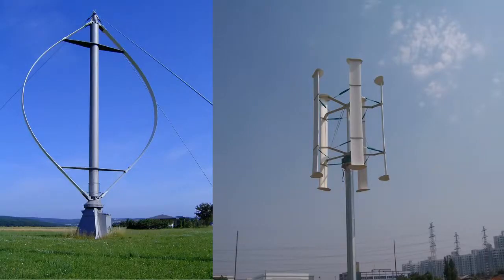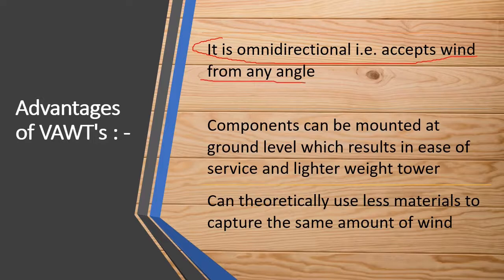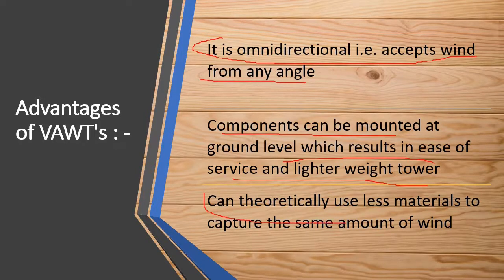These are two pictures of vertical axis wind turbines. We can see that the axis is vertical and the main parts are at ground level. The advantages are: they are omni-directional, meaning they accept wind from any angle; components can be mounted at ground level, resulting in ease of service and a lighter-weight tower; and theoretically they use less material to capture the same amount of wind.